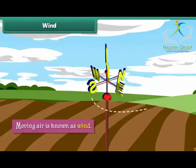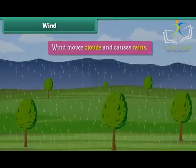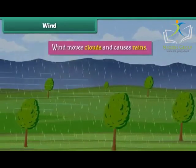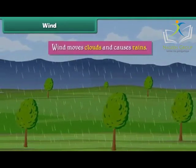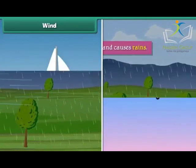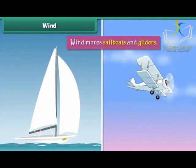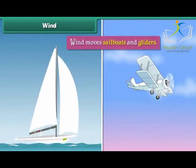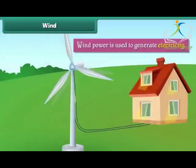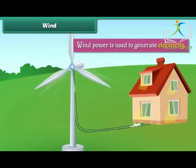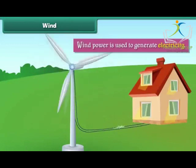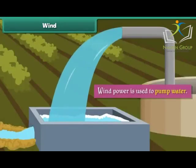Wind: Moving air is known as wind. Wind moves clouds and causes rain. Wind also moves sailboats and gliders. Wind power is used to generate electricity and to pump water.